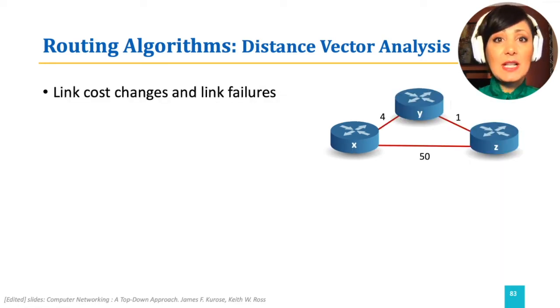What is the effect of changes in the cost of the links and link failures to this iterative calculation? In the distance vector algorithms, good news traverses fast. For example, initially in the figure, node X reaches Y and Z through Y, with costs 4 and 5. Node Y reaches each of X and Z directly, with costs 4 and 1.